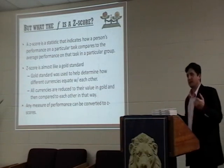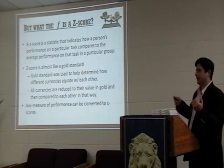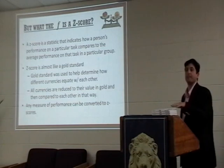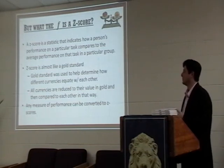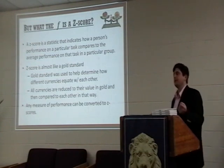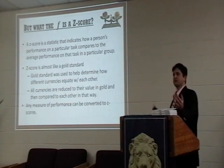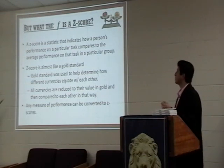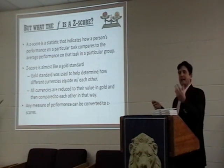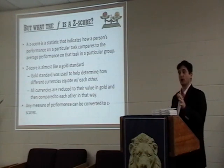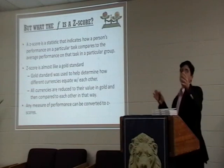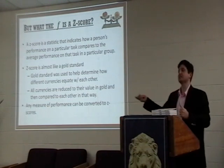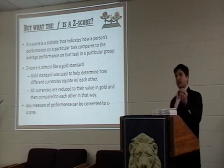A z-score is a standardized statistic that helps us understand how a person's performance on a given measure relates to the average performance on that measure for whatever group of interest we're talking about. You can think of it like a gold standard — when you think about the gold standard as it relates to currency, different currencies are converted to a gold standard so they're on the same metric and you can compare them more directly. Similarly, a z-score lets you take virtually any measure, convert it, and now compare things you previously couldn't compare because they were on different metrics. One main advantage: you can compare pitching statistics to hitting statistics more directly.